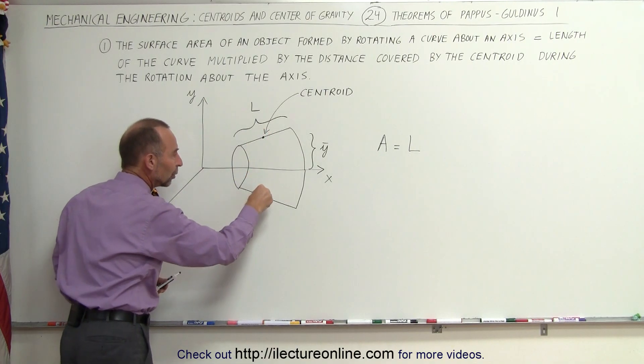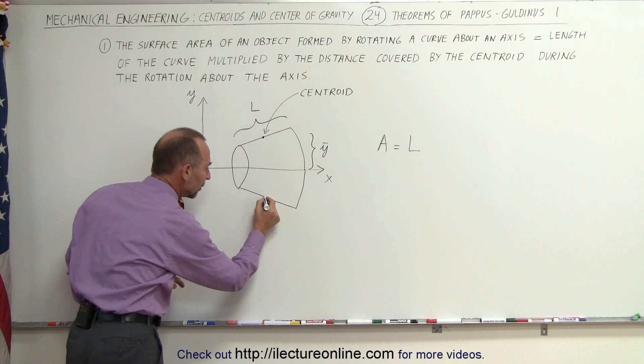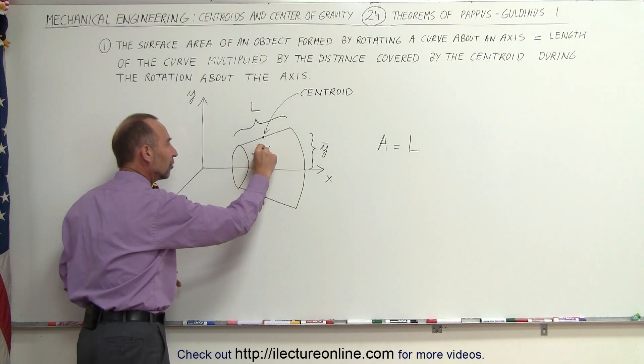If we take the centroid and we see that it will rotate about the axis. So when it comes to the other side here it will be right down here. It will form a circular path.